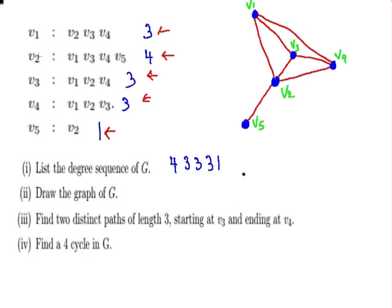Now, so what we're going to do now is to find two distinct paths of length 3, starting at V3 and ending at V4. This is the main part of the presentation. So let's look at that now.